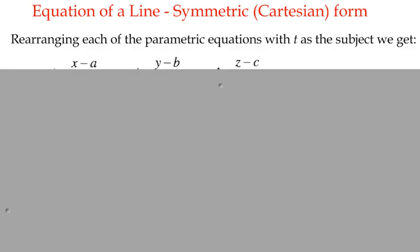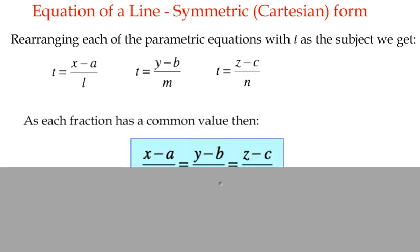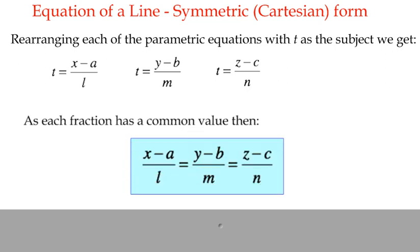We're going to create an equation with three equal fractions in it. We can effectively rearrange it so that we have t equals x minus a, which is the coordinate point, over l, which is a direction vector part for each of the x, y, and z parametric equations.